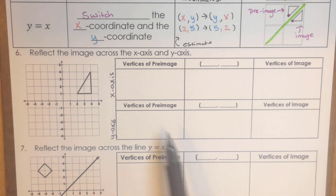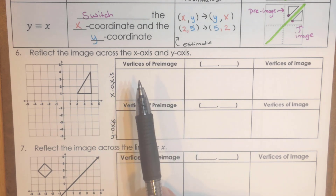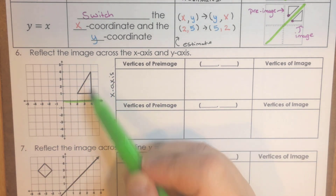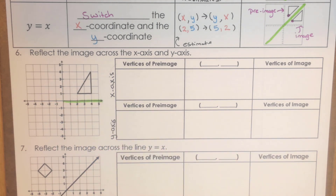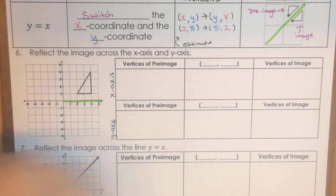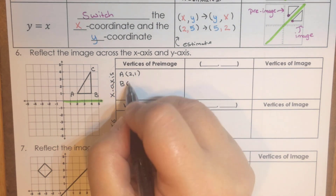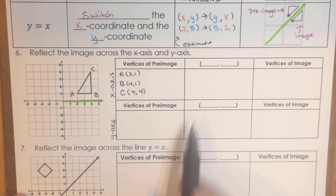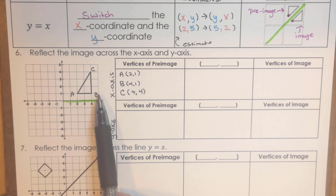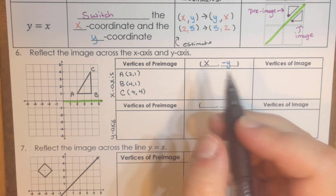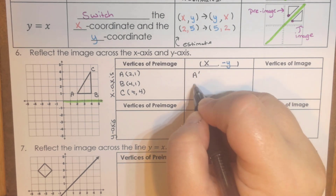Let's go ahead and do some examples now that we know how this works. On this first one, we're going to reflect across the X-axis, which means we're going to reflect across this line right here, and all of the points need to be equal distance from this green line. Let's name our points: A is the point (2, 1), B is the point (4, 1), and C is the point (4, 4). The rule for the X-axis: the X stays the same, but the Y coordinate changes to the opposite. So we're going to have A prime, B prime, and C prime.